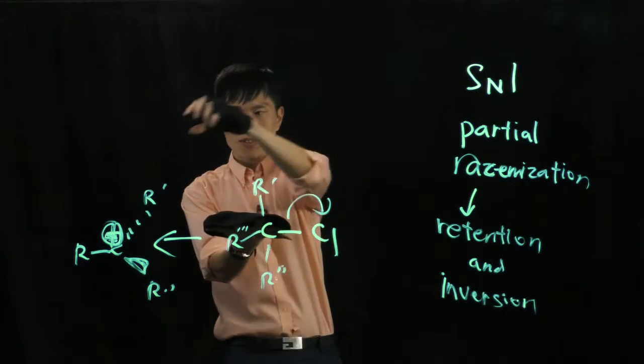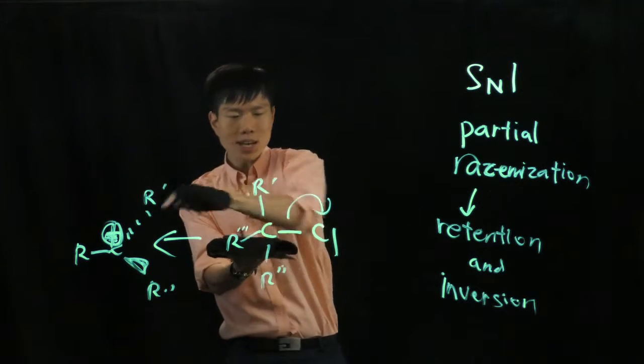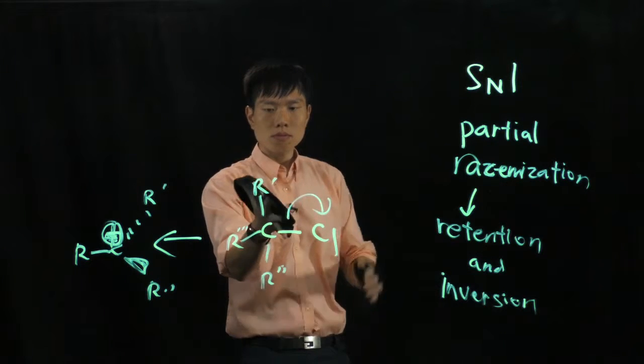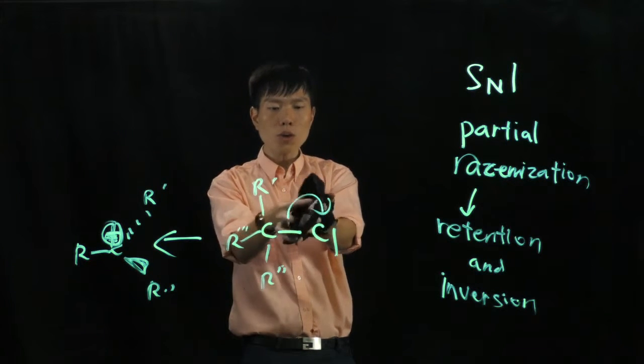So the next person, the nucleophile to come in to attack this carbocation, how does he wear this cap? Because it's flat, he doesn't know how to wear the cap.